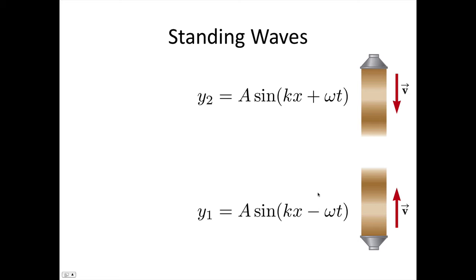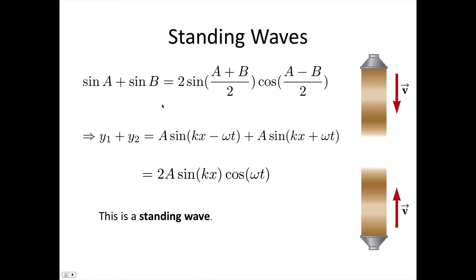So to work out the resultant wave, we need to add together these two waves. So when we do that, we can use this equation for adding sine functions: sin A + sin B = 2 sin((A+B)/2) cos((A-B)/2).